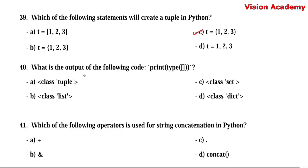Question number 40. What is the output of the following code: print(type([]))? Option A: class tuple. Option B: class list. Option C: class set. Option D: class dictionary. Here, option B — class list — is the right answer, because square brackets represent a list type of data.